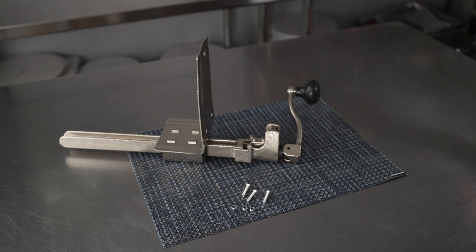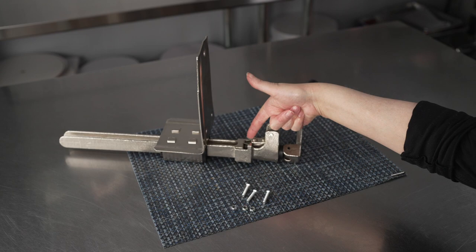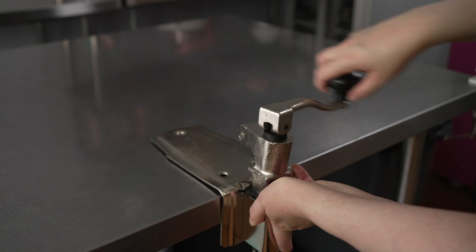All you need to do is position the can, drop the blade that's right there on top, and then take hold of this little handle and crank it around in a circle. It's going to make easy work of even really big-sized cans.